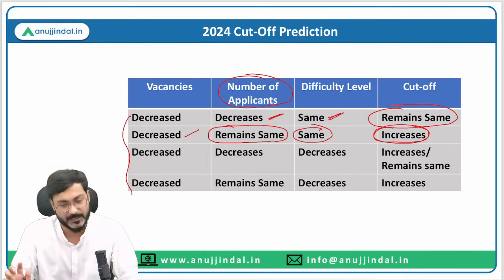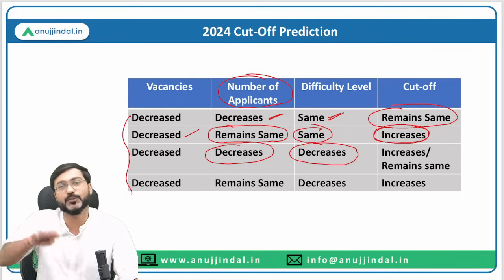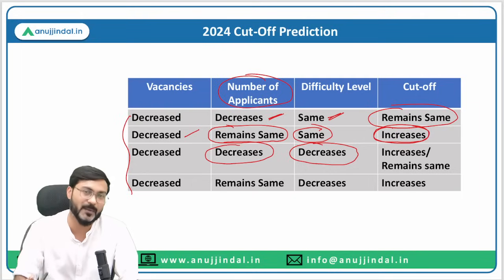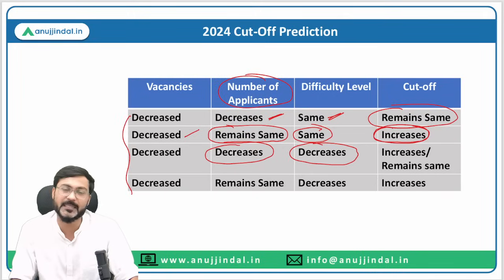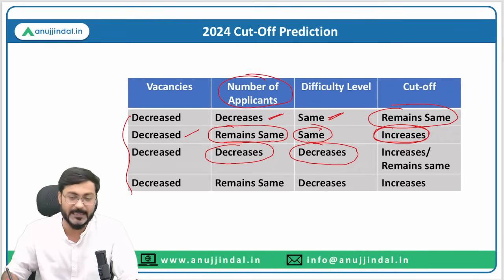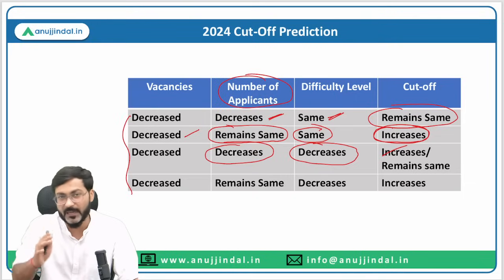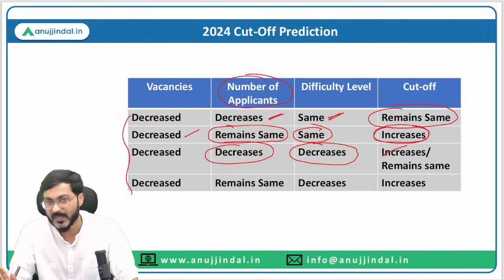Now, if the number of applicants decreases — say students feel discouraged by the fewer vacancies — and the difficulty level of the examination also decreases, then there are two possibilities: the cutoff could go up due to the decrease in difficulty level, or the cutoff could remain approximately the same due to the decrease in the number of applicants.